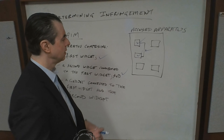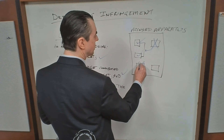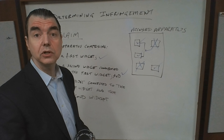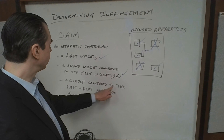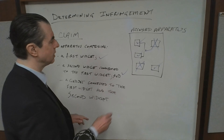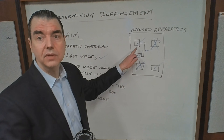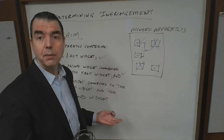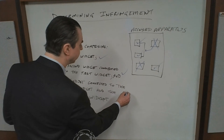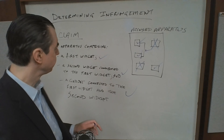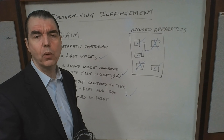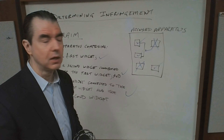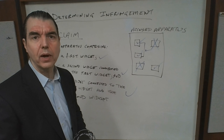Now we have to look at the third limitation: a gadget connected to the first widget and the second widget. We look, and this is not a gadget, this is not a gadget — but this is a gadget. However, when we check whether it's connected to the first widget and the second widget, in this case it doesn't have any connection to them. That means the claim is not infringed.